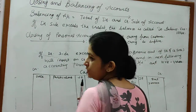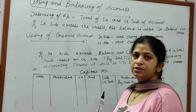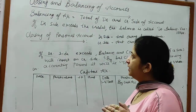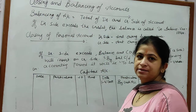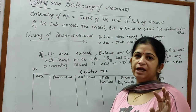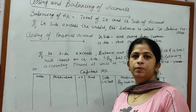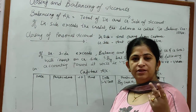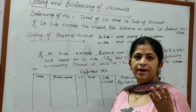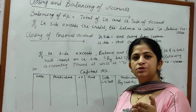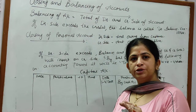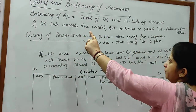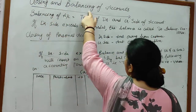Now, before starting the numerical, we will discuss one more point: closing and balancing of accounts. After understanding this topic, we will do three types of numericals — simple journal entry with how to open the account and post and balance, and secondly, from cash book or subsidiary book how to post in the account.